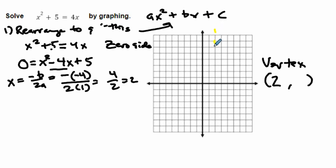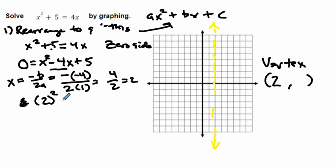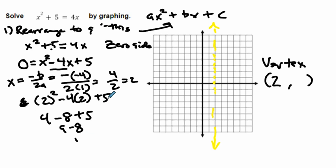That also means my axis of symmetry is the line x equals 2, going through there. Now let's take our x equals 2 and figure out the y-coordinate of the vertex. I'll plug 2 into my rewritten equation: 2 squared minus 4 times 2 plus 5 equals 4 minus 8 plus 5. That's 9 minus 8, which equals 1. So the vertex is (2, 1).